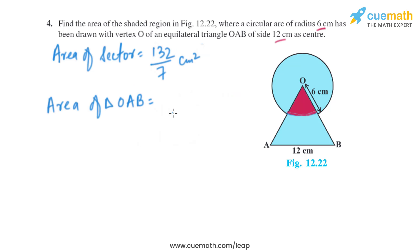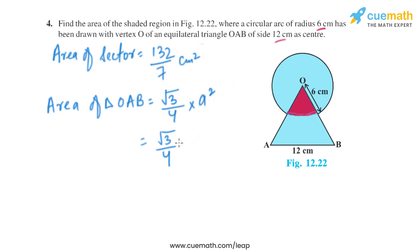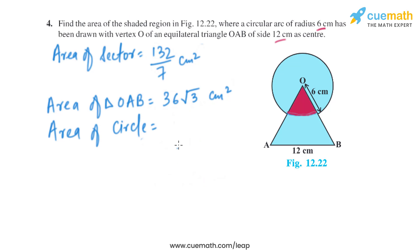Now let's find the area of triangle OAB. It is an equilateral triangle, and the formula for the area of an equilateral triangle is root 3 divided by 4 into a squared, where a is the side. So it will be root 3 divided by 4 into 12 squared, because the side is 12 centimeters. We get the area of triangle OAB as 36 root 3 square centimeters.